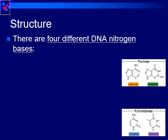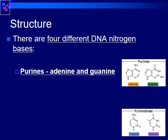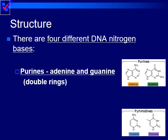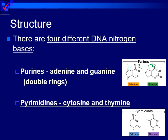Of the four different nitrogen bases, there are two different types. The first type are purines — adenine and guanine are purines. These have two ring-like structures, so we call these double rings — two carbon rings. Meanwhile, pyrimidines are cytosine and thymine. These only have one ring, so their entire structure is comprised of just one carbon ring.